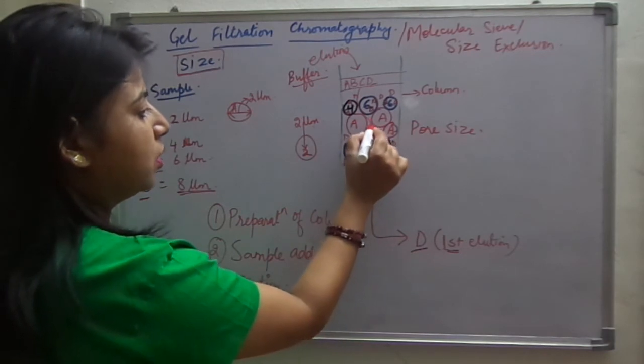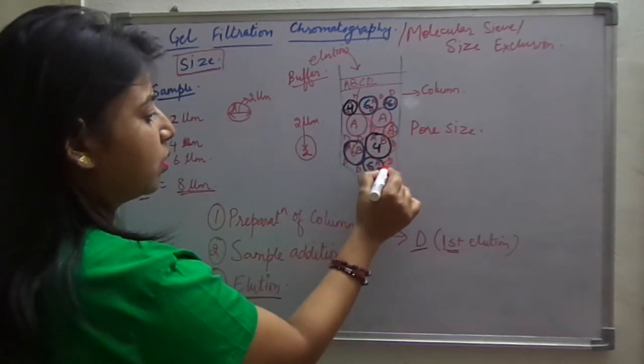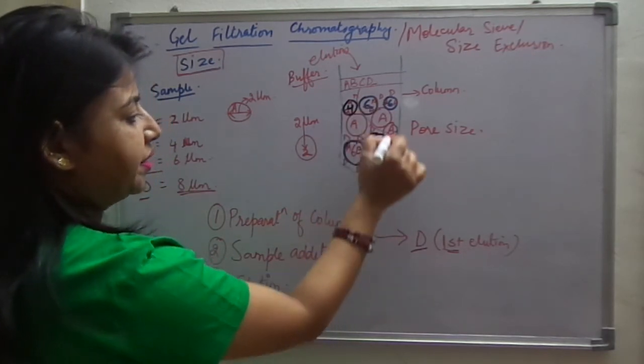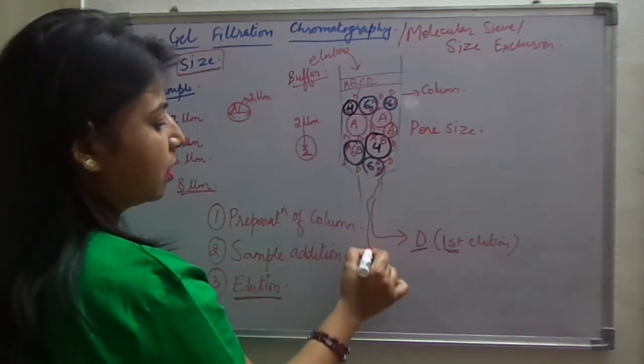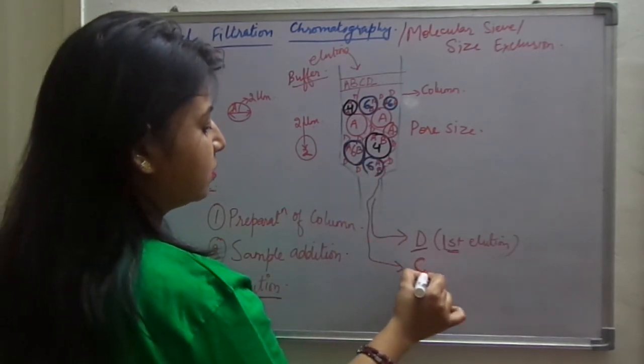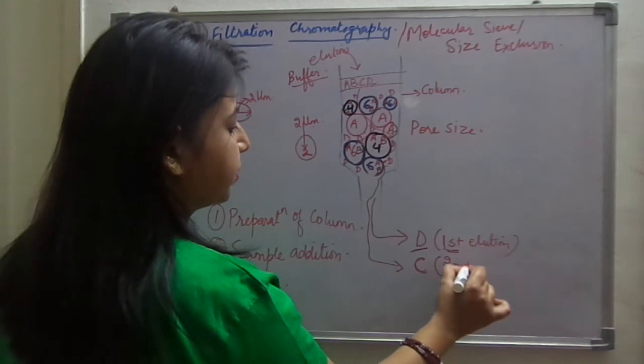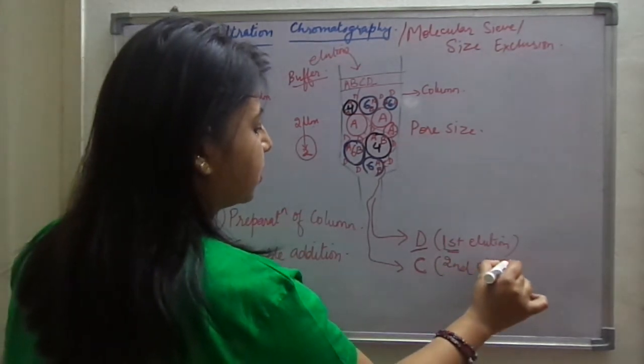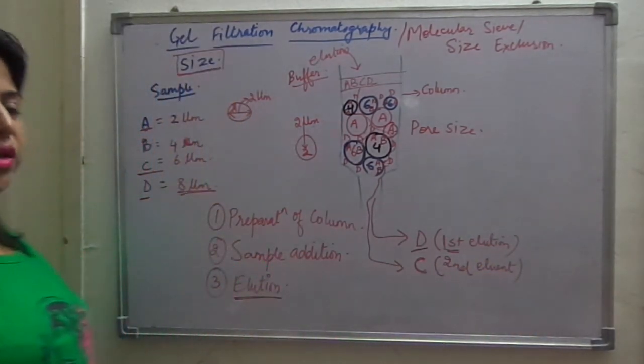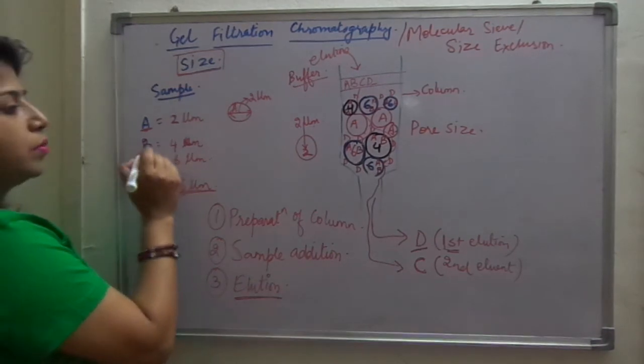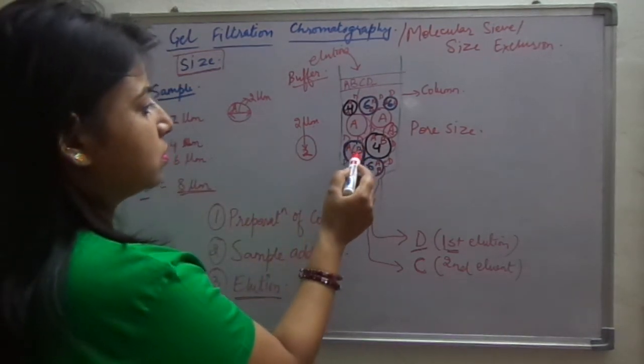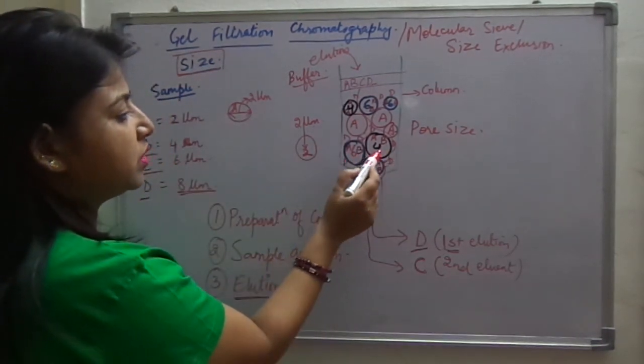But if it is coming over here, it can come over here. But it cannot enter any of the other beads and comes out in the second number, then C, second eluant. Eluant is the correct word, then the next size, obviously B which crosses these beads.